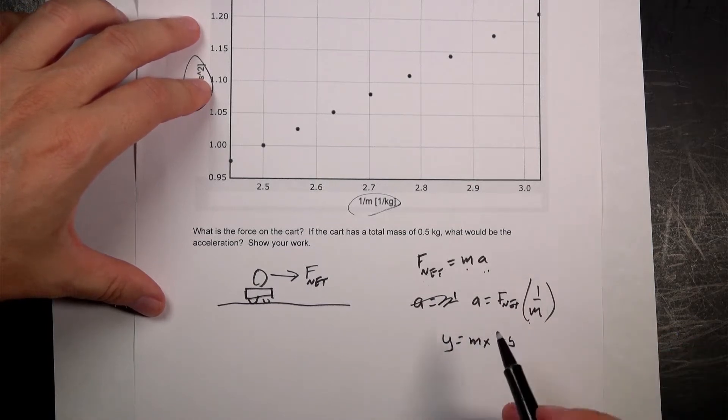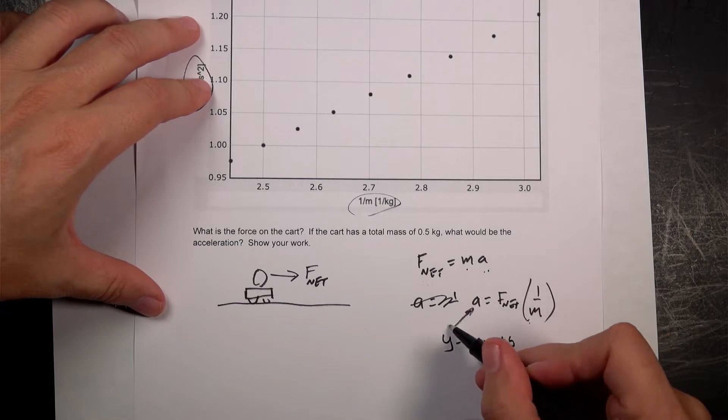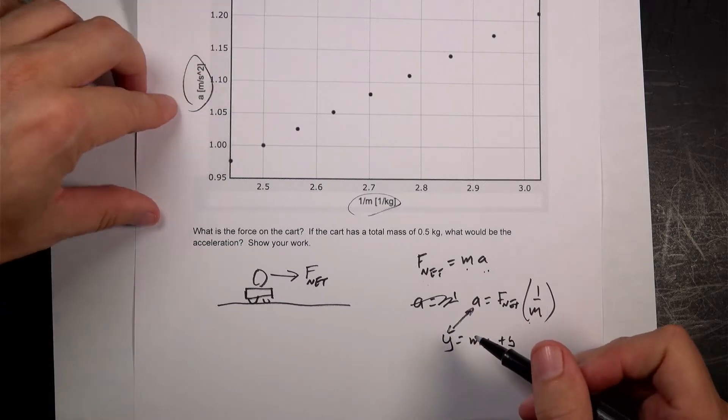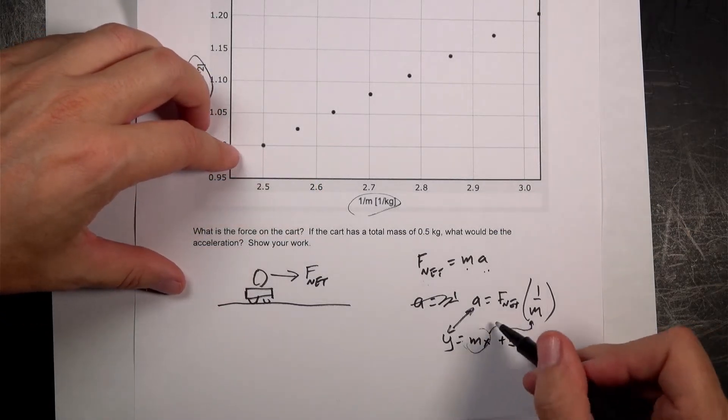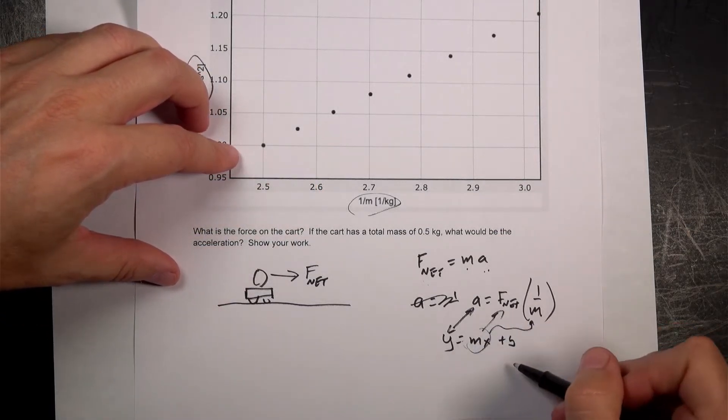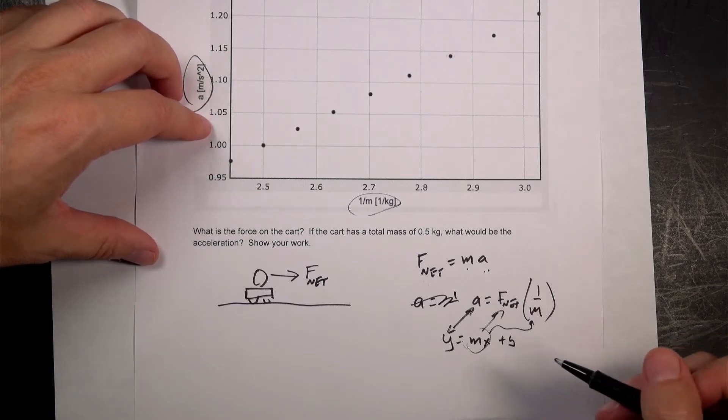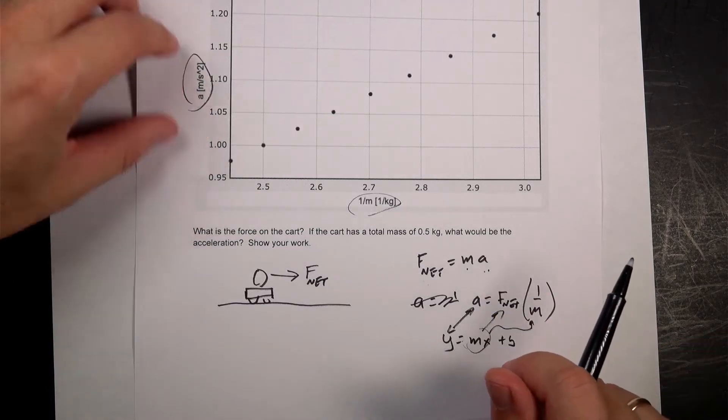Now that is like Y equals MX plus B. That's the equation of a straight line. So in that equation, that's my A. We already know that because it's plotted right there. 1 over M, that's my X. So the slope of this line will be the net force. And the intercept should be close to zero, but if it's not, it doesn't really matter.